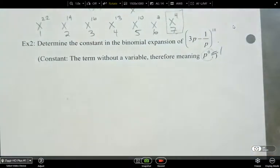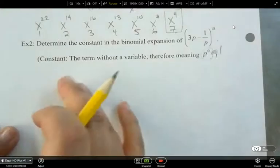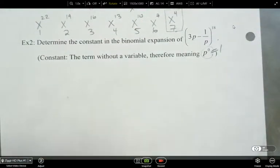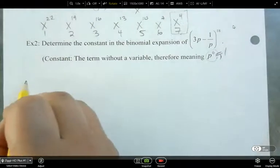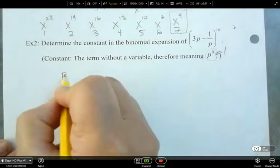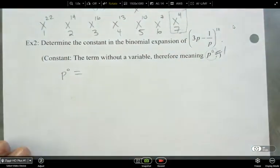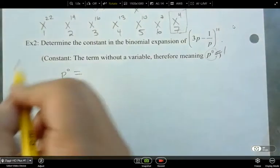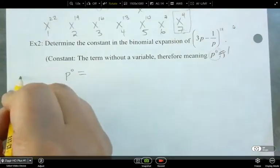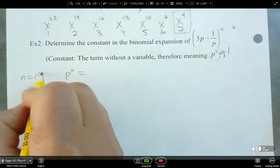All right, so that was the point of me asking that strangely worded question at the beginning. My apologies. So first, we need to figure out what p of 0, where it is. Let's write down what we know. So n is equal to 18.